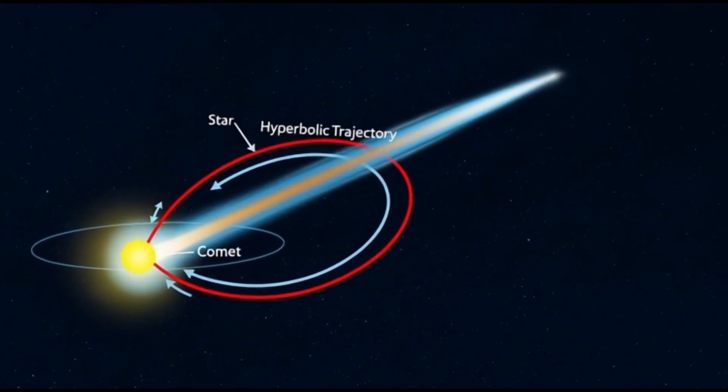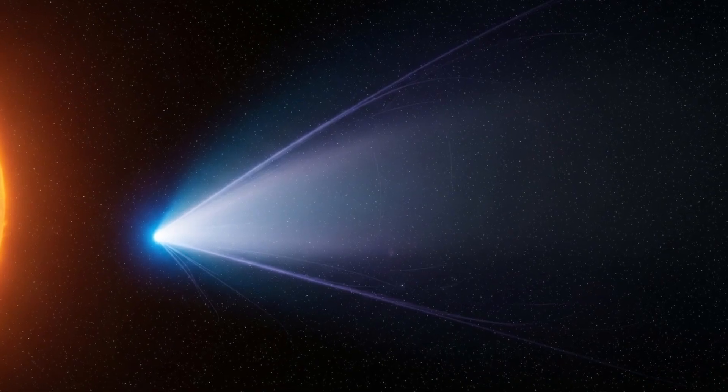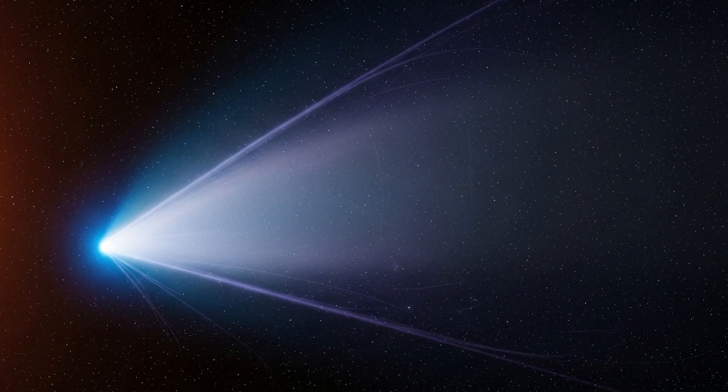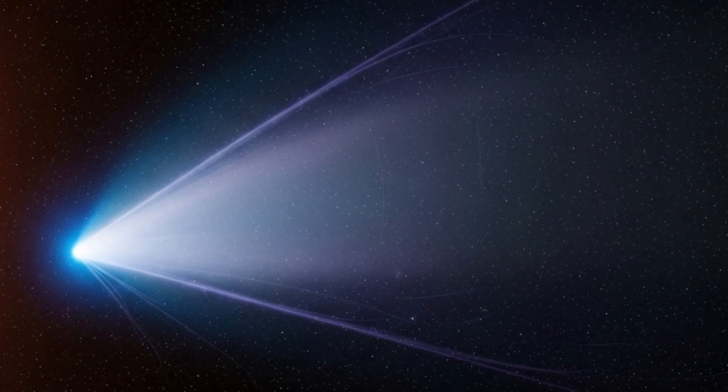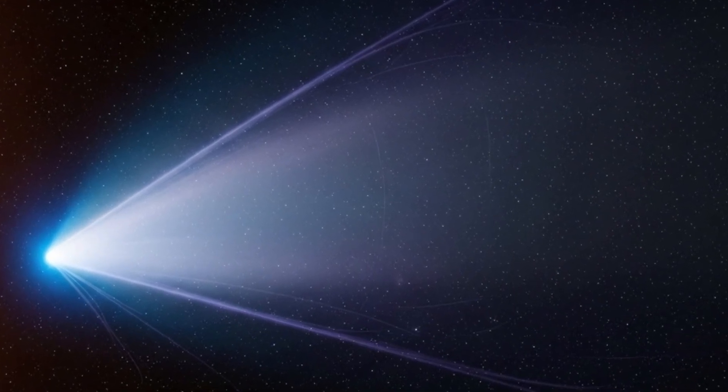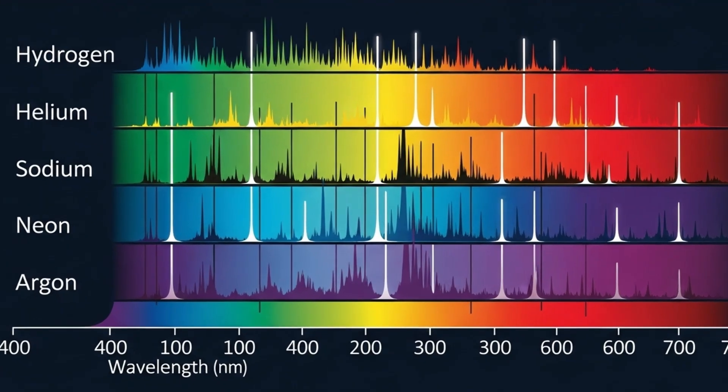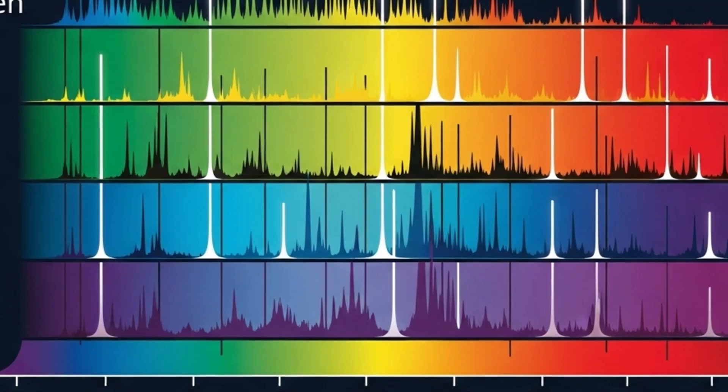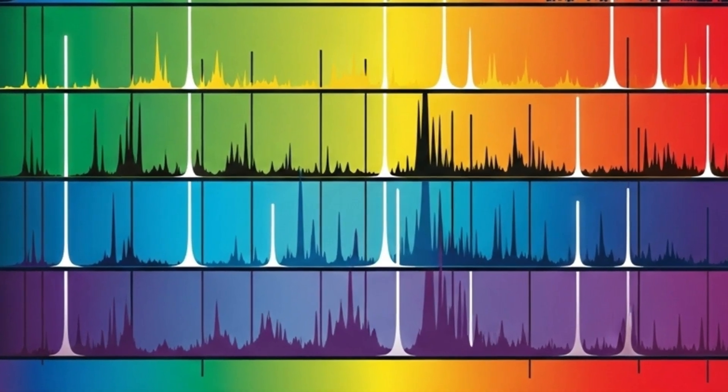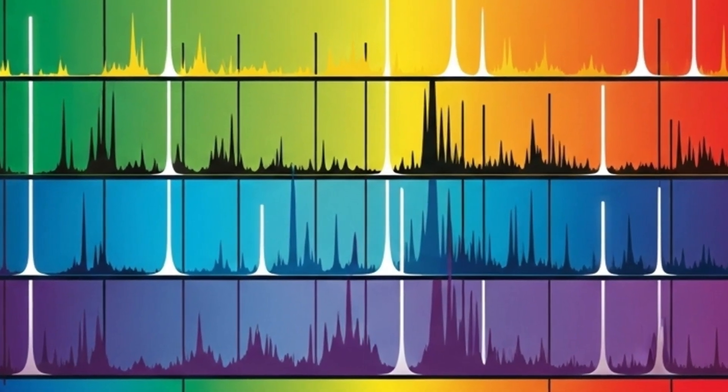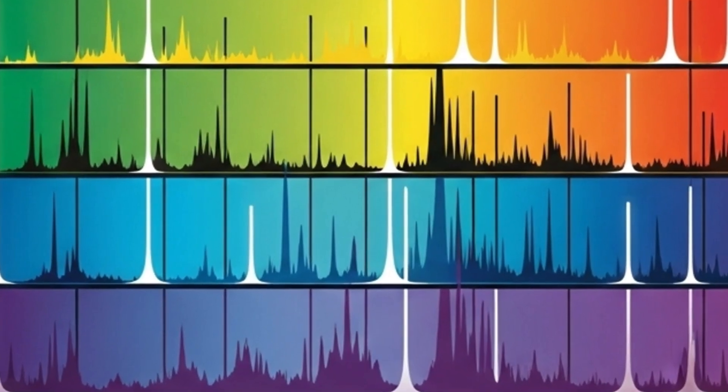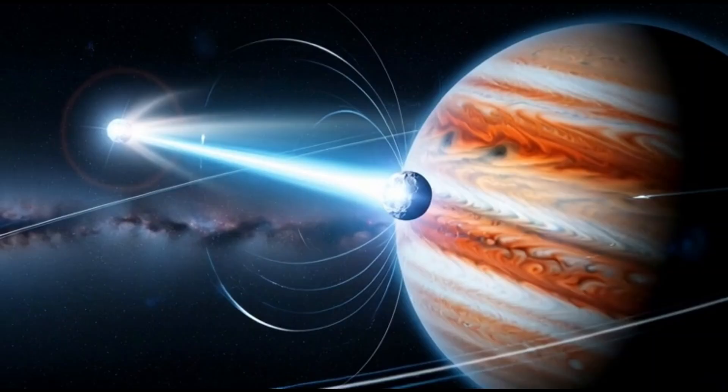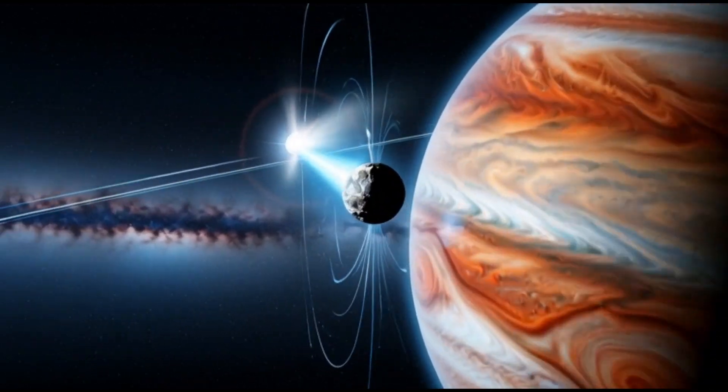Typical comets are mostly water ice, which stays frozen solid until they're much closer to the sun. But Atlas started venting gas way out beyond Jupiter, in a region so cold that normal comets remain asleep. The explanation? Its surface wasn't dominated by frozen water. It was covered in frozen carbon dioxide, the same stuff as dry ice. CO2 sublimates at much lower temperatures, meaning Atlas could start spewing gas long before a regular comet would even wake up.